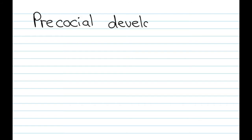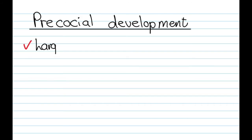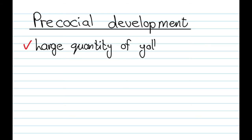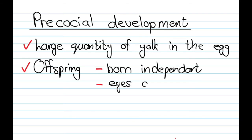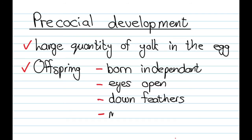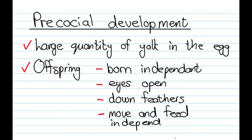First up is precocial development. Looking at the egg yolk, there will be a large quantity of egg yolk. When we look at the offspring, they will be born independently — their eyes will be open, they will have down feathers if they're birds, and they'll be able to move and feed independently.